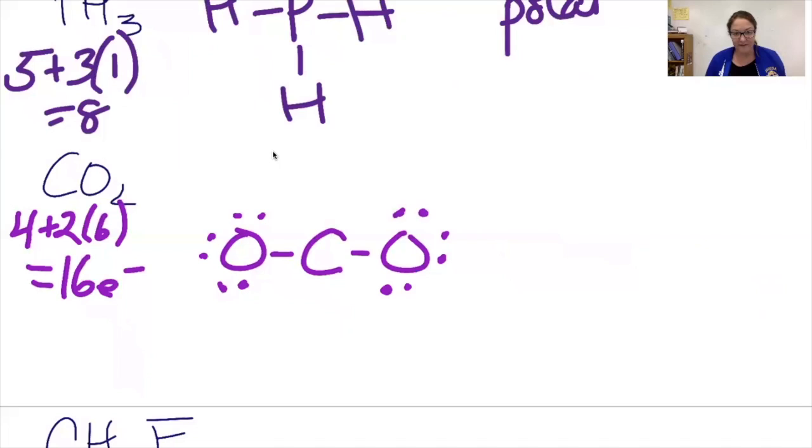I'm going to check my rule of octet. Carbon's not satisfied, so I'm going to have to move electrons in. That's going to make carbon a little bit better. I need to double bond the other side also. Now I check. My structure is good. Do I have lone pairs on the central atom? No. Are the outside elements the same? Yes. So this is nonpolar.